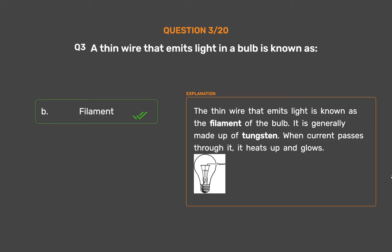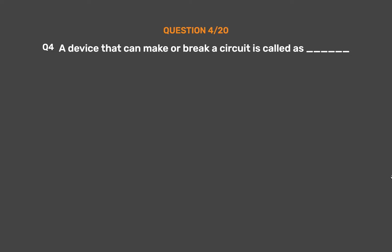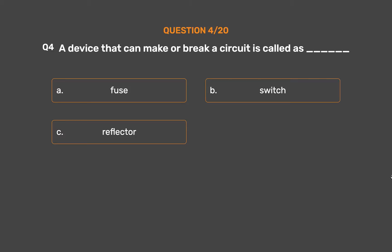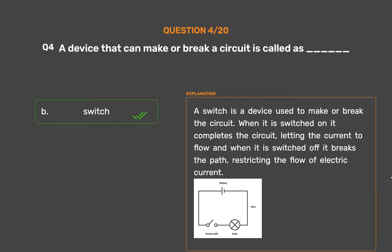Question number 4. A device that can make or break a circuit is called a blank. Option A: Fuse. Option B: Switch. Option C: Reflector. Option D: Cell. The correct answer is Option B, Switch. A switch is a device used to make or break the circuit. When it is switched on it completes the circuit, letting the current flow, and when it is switched off it breaks the path, restricting the flow of electric current.